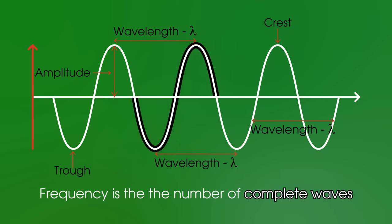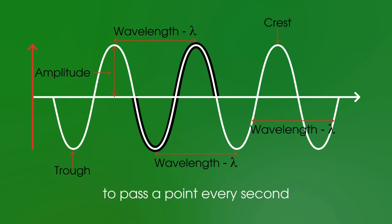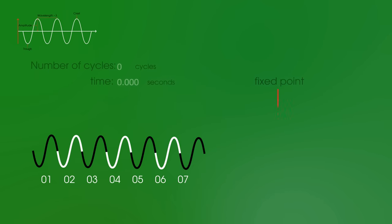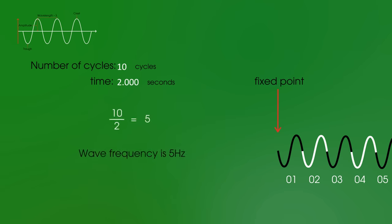Finally frequency which is the number of complete waves to pass a point every second. And it's given the unit of hertz. So an example of this would be if 10 waves pass in 2 seconds the frequency would be 5 hertz.